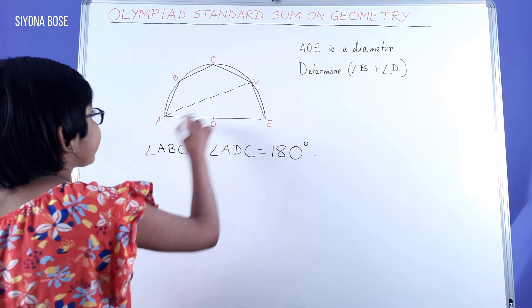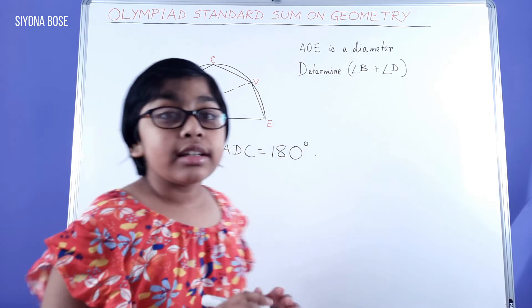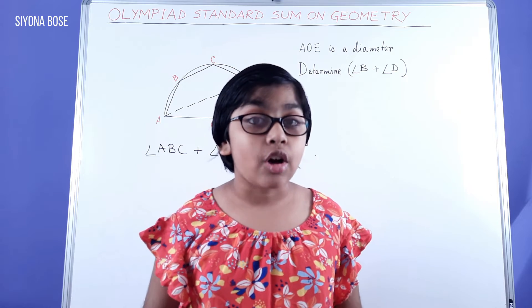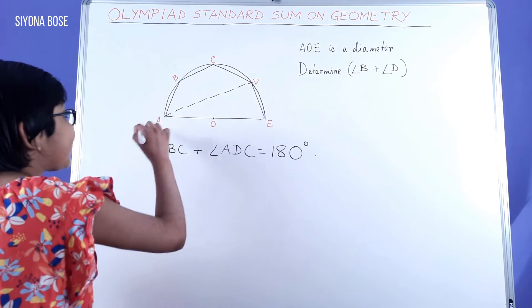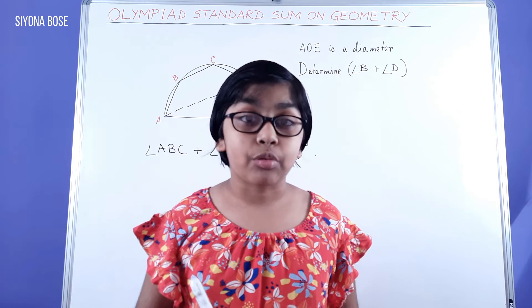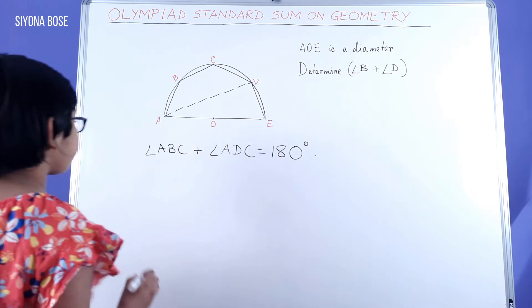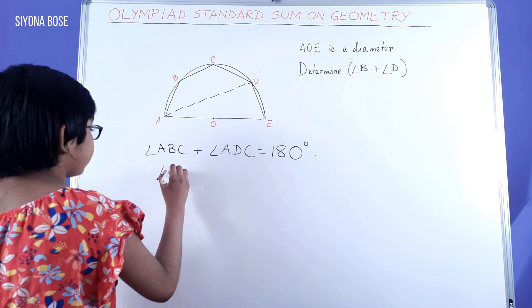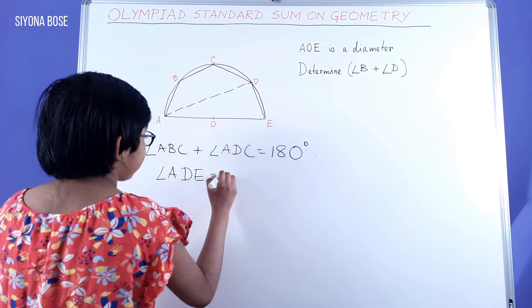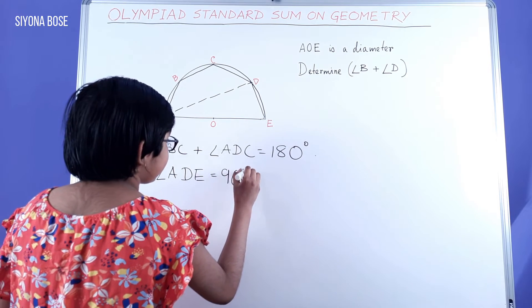Next, in triangle ADE, any angle in the semicircle is a right angle. So here, angle ADE is one angle in the semicircle, which makes it 90 degrees. So angle ADE equals 90 degrees.